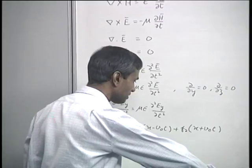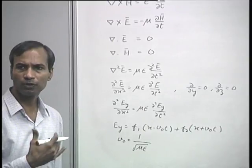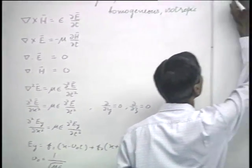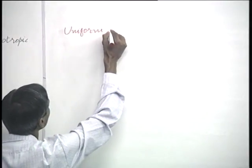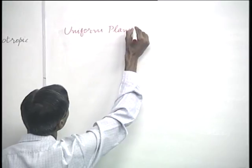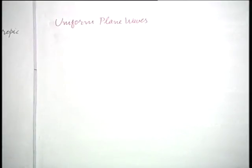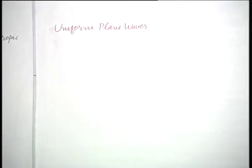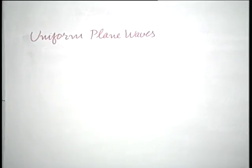As mentioned last time, this is an important case, although it appears highly simplified. We mentioned that far away from sources, most waves can be represented at least locally as uniform plane waves. To consider the properties, we focus attention on one of these equations.